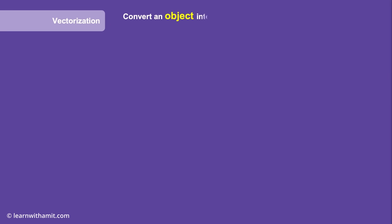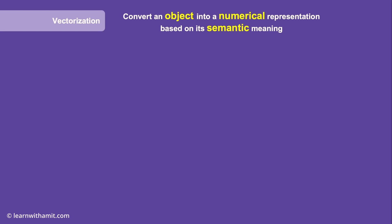Vectorization is a technique to convert an object into a numerical representation based on its semantic meaning. The object can be any form of data — for example, text, image, or even audio or video.